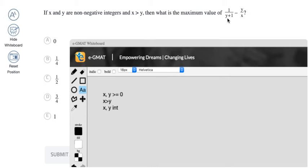Remember, they're non-negative integers. So y is either 0 or positive. So the minimum is what then? The minimum is 0. So if the minimum of y is 0, then this fraction 1 upon 0 plus 1 is just 1. I'll just keep it as 1.